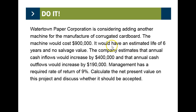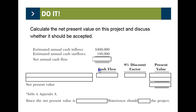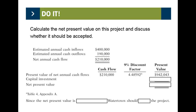Watertown Paper is considering adding a machine costing $900,000, with an estimated life of six years and no salvage value. Cash flows increase by $400,000 and annual cash outflows by $190,000, giving net cash flows of $210,000. Management has a required rate of return of 9%. Taking the $210,000 times the present value of an annuity factor at 9% for six years gives a present value of $942,043. The project costs $900,000, so the net present value is $42,043 — a favorable project.